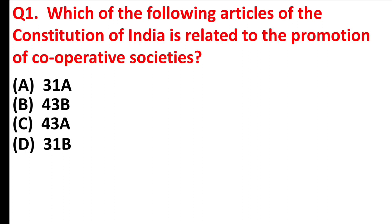Which of the following articles of the Constitution of India is related to the promotion of co-operative societies? Answer is Option B: Article 43B.